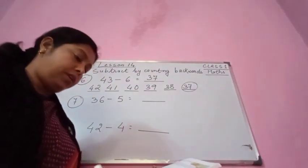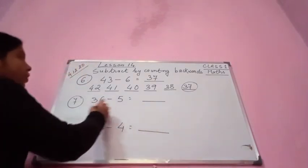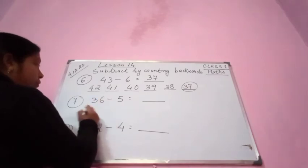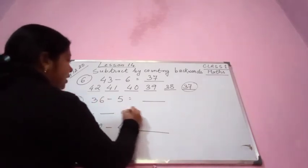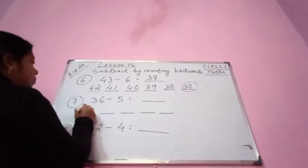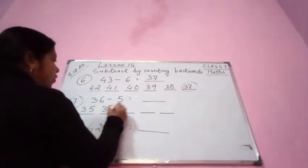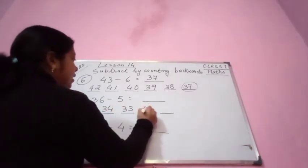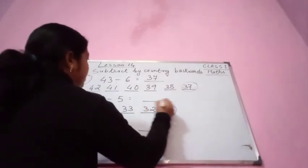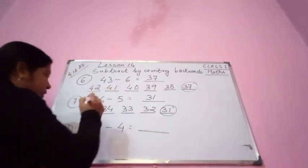Next number: 36 minus 5. Before 36, we are going to count 5 places. Before 36 it is 35, 34, 33, 32, and 31. So the answer: 36 minus 5 is 31.